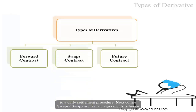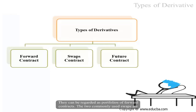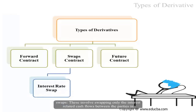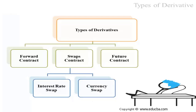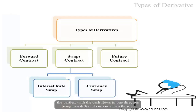Next come swaps. Swaps are private agreements between two parties to exchange cash flows in the future according to a pre-arranged formula, and can be regarded as portfolios of forward contracts. The two commonly used swaps are interest rate swaps and currency swaps. Interest rate swaps involve swapping only the interest-related cash flows between parties in the same currency, whereas currency swaps entail swapping both principal and interest between parties, with cash flows in one direction being in a different currency than those in the opposite direction.